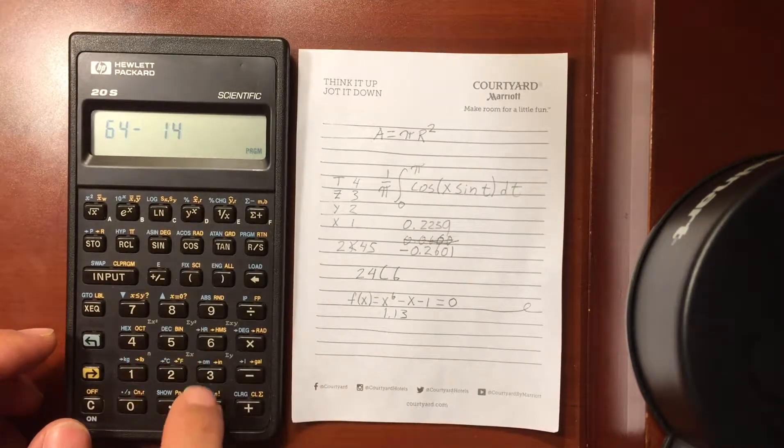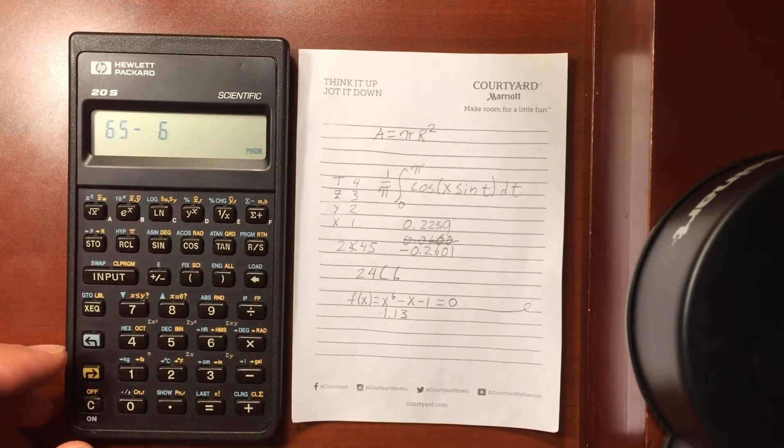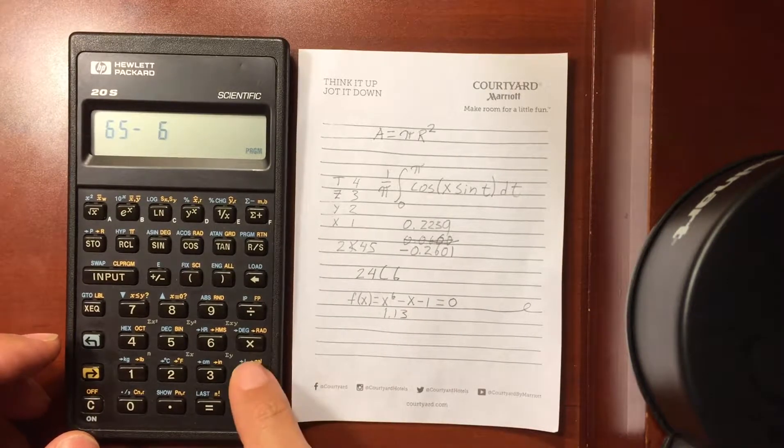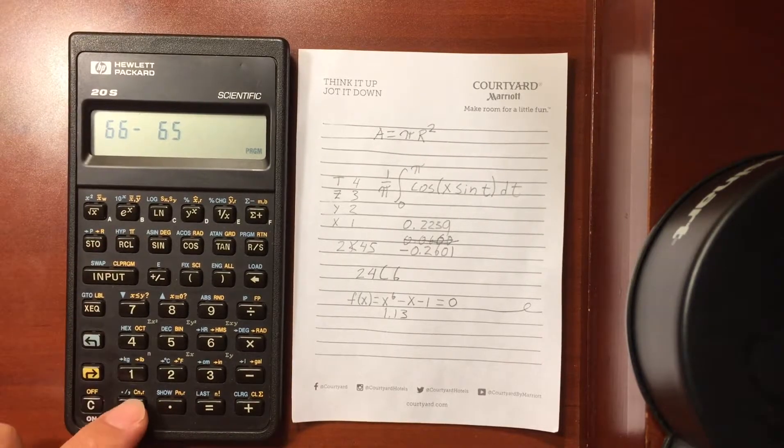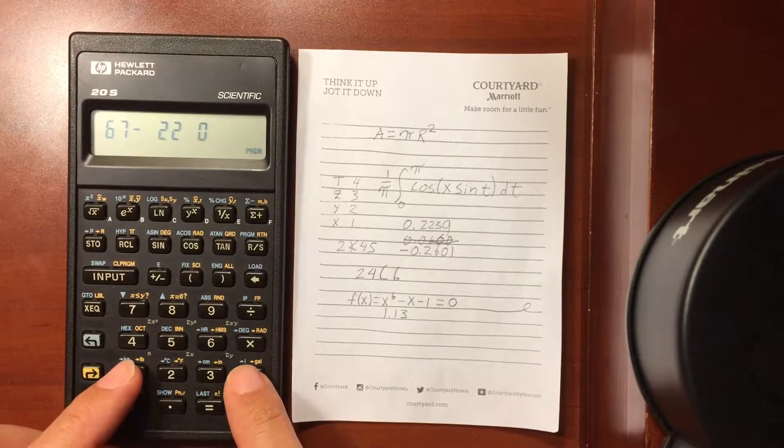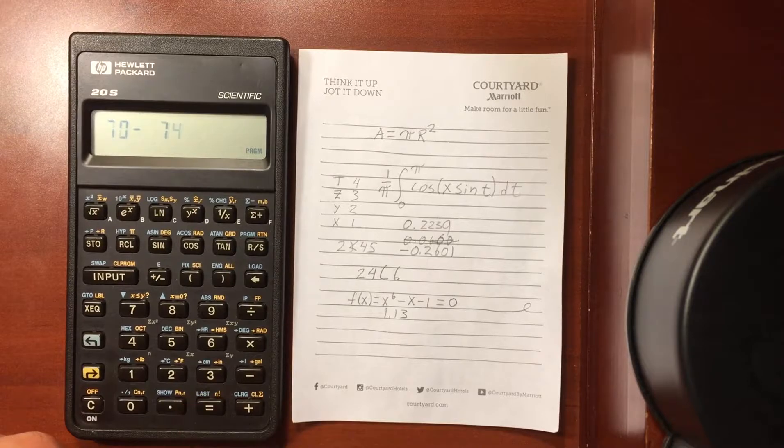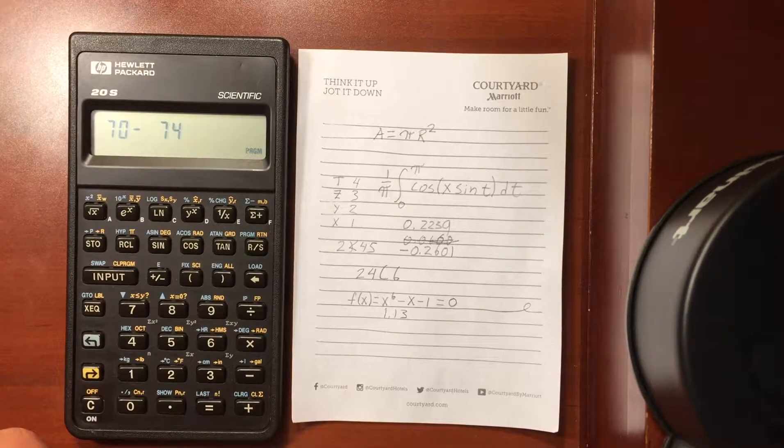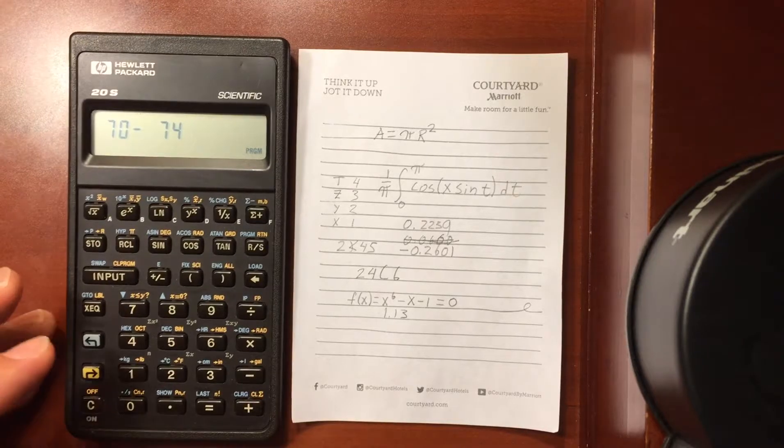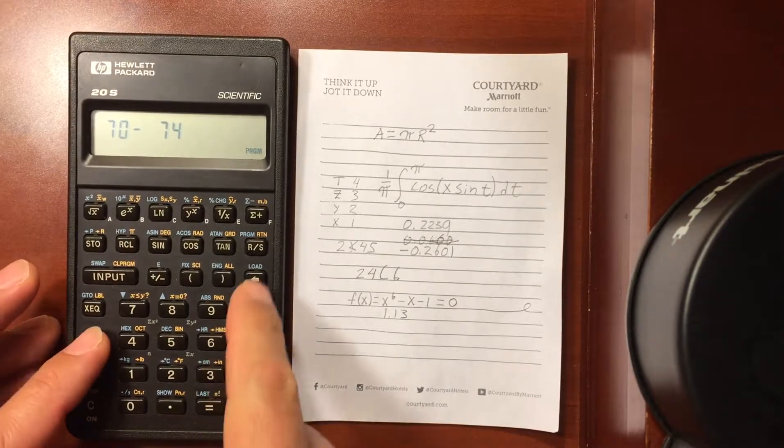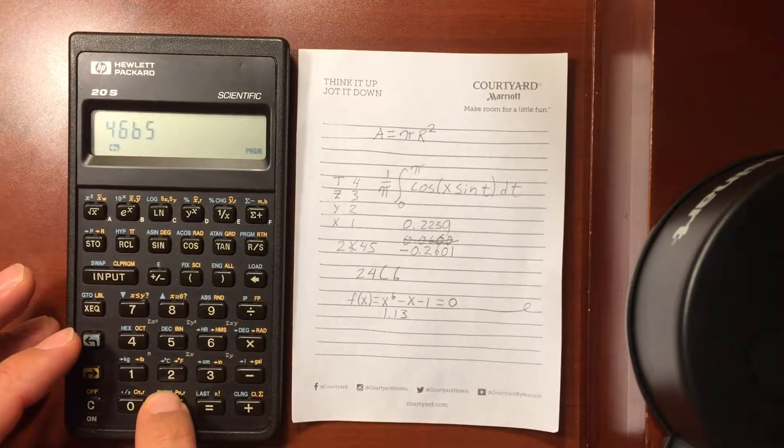Now I'm going to subtract, then recall what I had previously put in the zero register, which is x. I'm going to subtract one, say equal, and that should give us the answer. Let's exit our program space here.